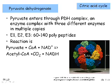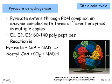Pyruvate dehydrogenase is almost like a little factory. It's a complex with three different enzymes in multiple copies arranged together. Depending on the species, the pyruvate dehydrogenase complex can have anywhere from 60 to 140 proteins in it — it's over 200 angstroms, or 20 nanometers, across. The overall reaction: pyruvate plus CoA plus NAD+ gives rise to acetyl-CoA, a carbon dioxide molecule, and reduced NADH. The NADH can be fed into oxidative phosphorylation, and the acetyl-CoA gets fed into the citric acid cycle.